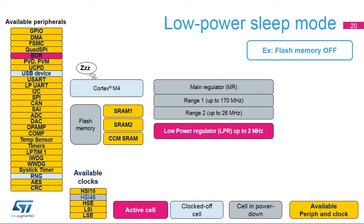In low-power sleep mode, the CPU clock is off and the logic is supplied by the low-power regulator. The system clock is up to 2 MHz. Flash memory can be configured in power down and can be gated off. SRAMs can be gated off. All peripherals can be activated except the USB, OTG, and random number generator.